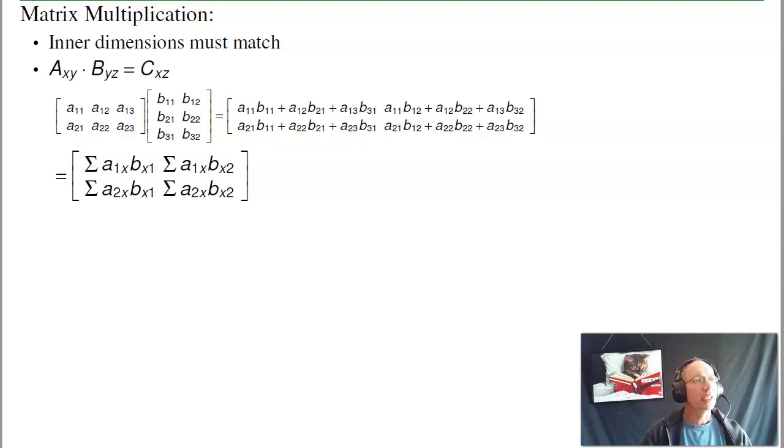When you multiply matrices, the inner dimension has to match. So a two by three times a three by two is a two by two. You take the first row times the first column, that's A11. First row times second column, that's C12. Second row times first column, C21. Second row times second column, C22. That's matrix multiply.